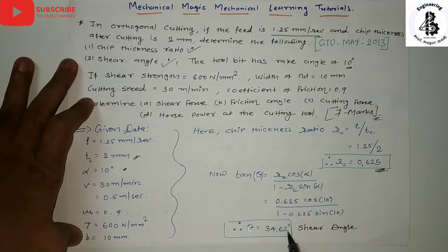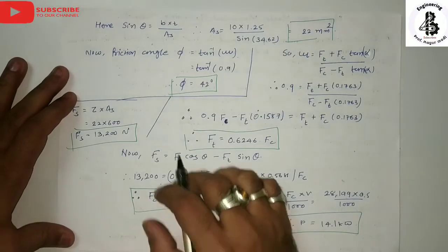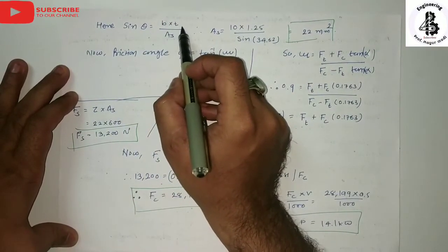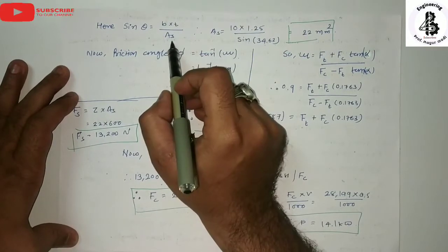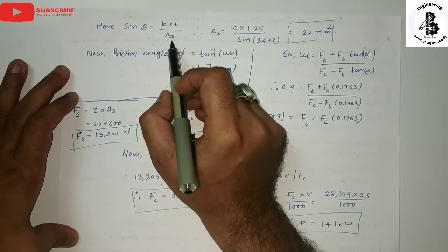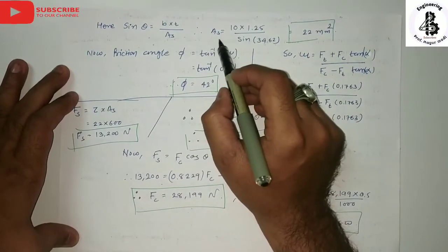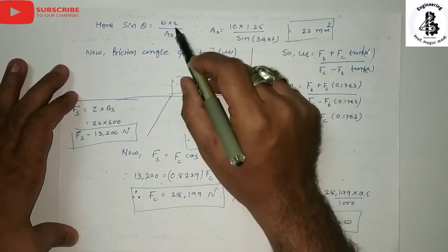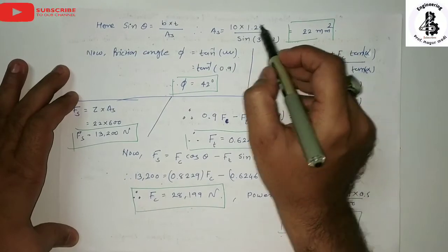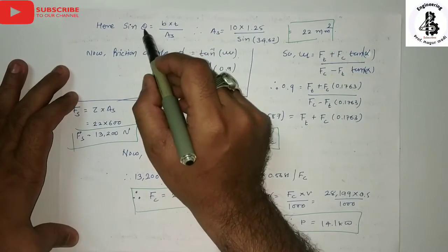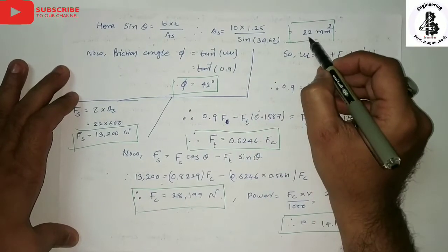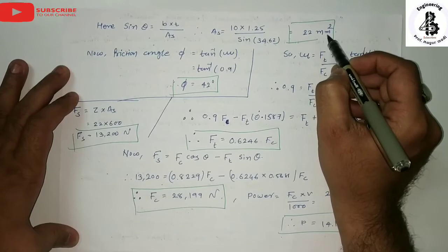Now, the shear area: sin(phi) = (B × t) / As, where As is the shear area. So As = (B × t) / sin(phi) = (10 × 1.25) / sin(34.62 degrees), giving a shear area of 22 mm square.